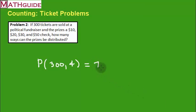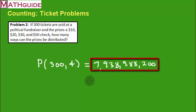It gives me this ridiculously large number. Writing that number that we just saw, this is what the calculator pulled up, which is a horribly large number. This is almost 8 billion: 7,938,988,200 ways of distributing the prizes. Let's go on to problem three.